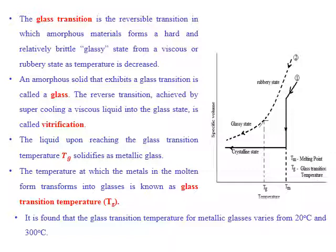A molten metal that transforms into a solid very rapidly results in metallic glasses. When the liquid reaches the glass transition temperature Tg, solidification produces metallic glasses. Curve one in the diagram represents solidification of a normal metal with a low cooling rate, resulting in a crystalline structure. When the molten metal is cooled rapidly to the glass transition temperature Tg, the glassy state is obtained.